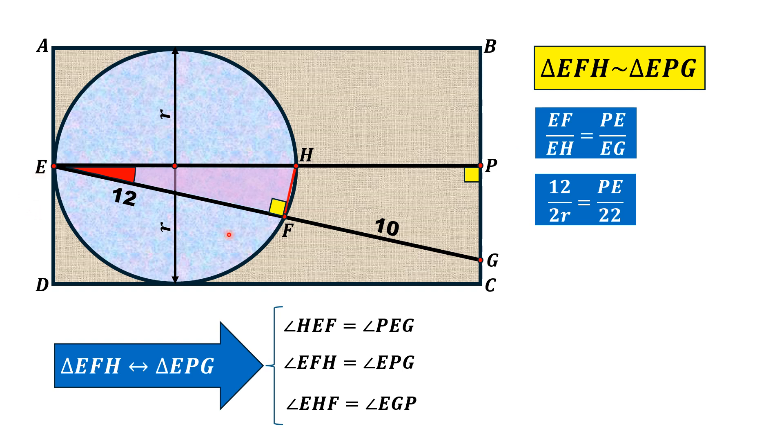EF is equal to 12, EH is equal to 2R. EH is the diameter of the circle and we have called the radius of the circle as R, so the diameter is 2R. EP over EG length is 12 plus 10, that is 22.